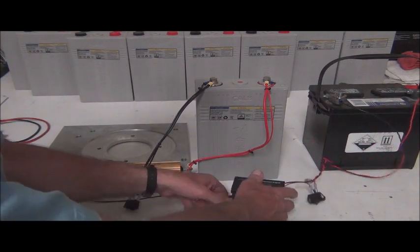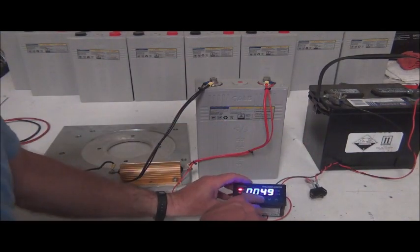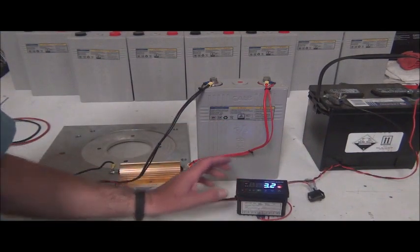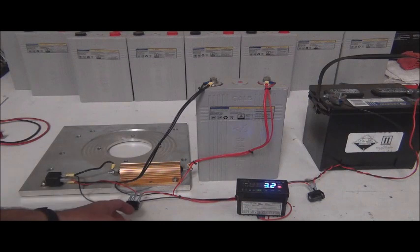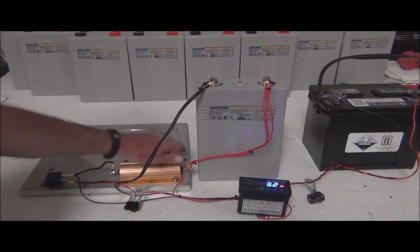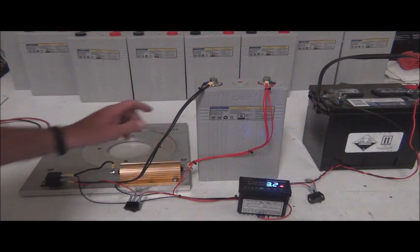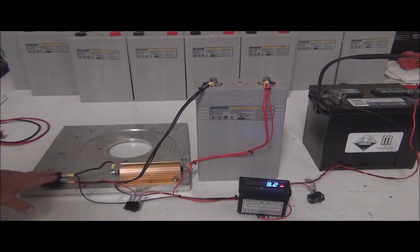And all we've done is put a switch in line so that we can turn the JLD 404 on or off. The other switch just allows us to turn off the relay, which basically is turning off the load. So that's kind of the 12 volt setup. The 12 volt is also going to operate our relay.